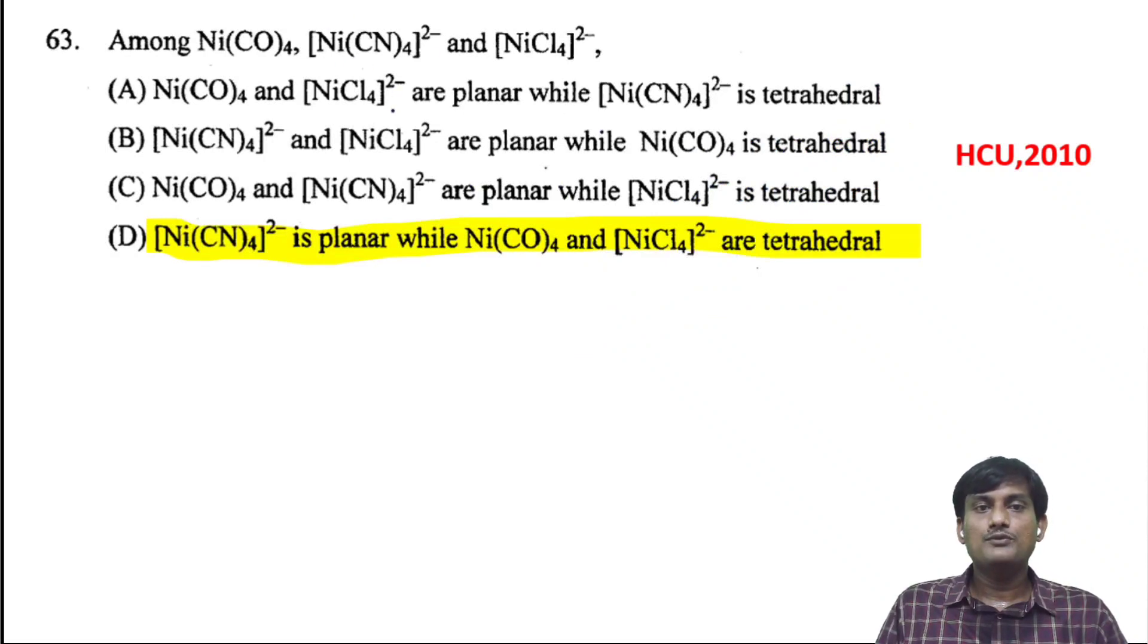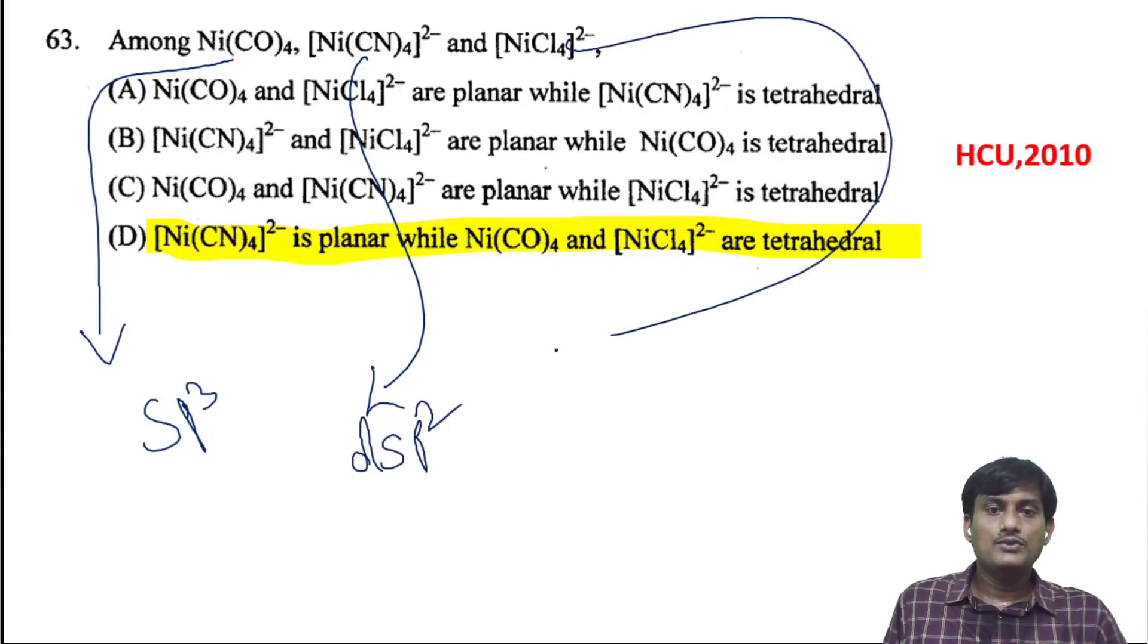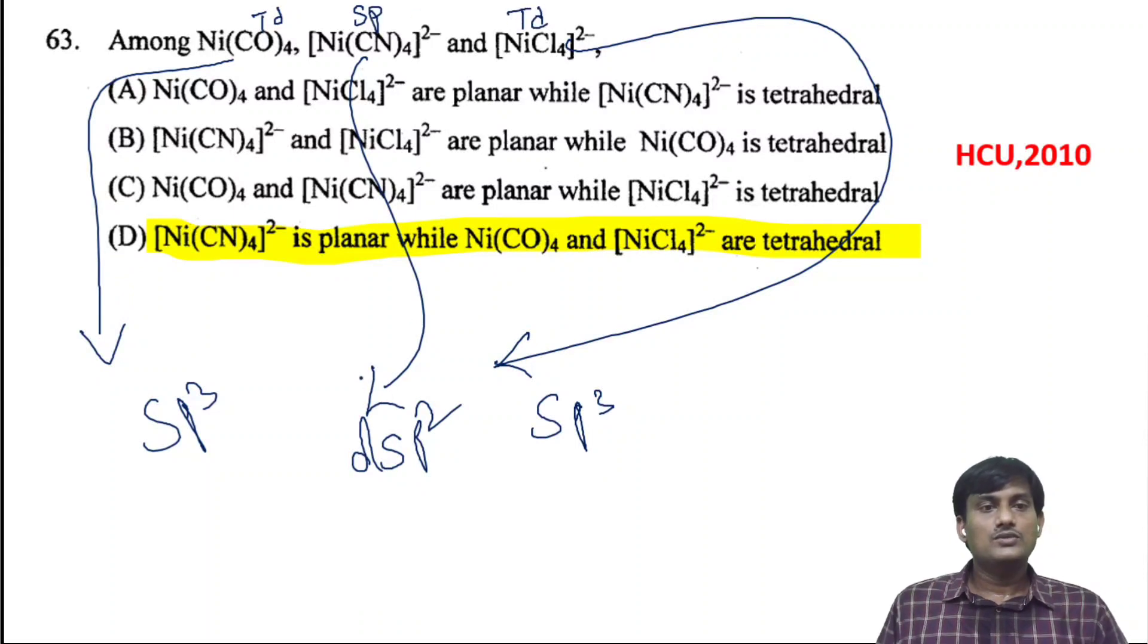Among Ni(CO)4, Ni(CN)4^2-, and NiCl4^2-, what are the structures? Ni(CO)4 has SP3 hybridization. Ni(CN)4^2- has square planar dsp^2 hybridization. NiCl4^2- has SP3 hybridization. So Ni(CO)4 is tetrahedral, Ni(CN)4^2- is square planar, and NiCl4^2- is tetrahedral. The correct option is: Ni(CN)4^2- is planar while Ni(CO)4 and NiCl4^2- are tetrahedral.